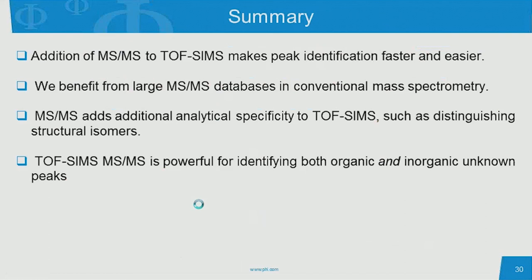In summary, the addition of MS-MS to TOF-SIMS makes peak identification faster and easier — you can now go to 100% certainty in unknown identification. Most importantly, we can benefit from the large MS-MS databases in conventional mass spectrometry. The structural isomer example shows that MS-MS gives TOF-SIMS even greater specificity. Finally, MS-MS is a powerful method for identifying both organic and inorganic peaks. Thank you, everybody.